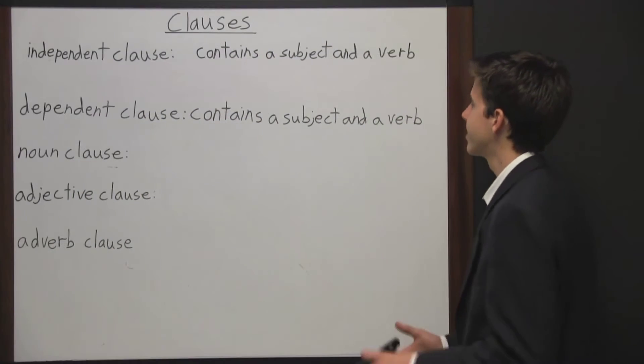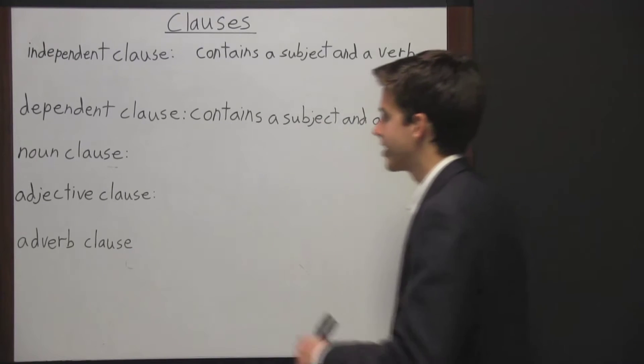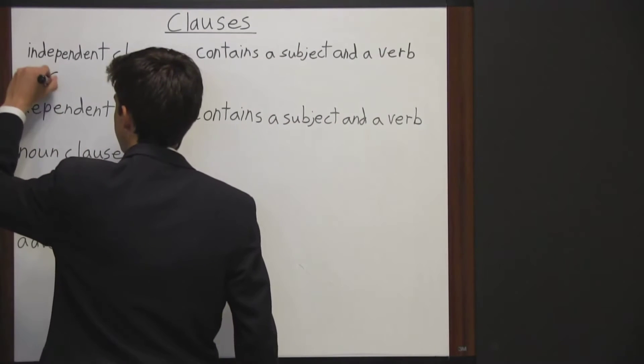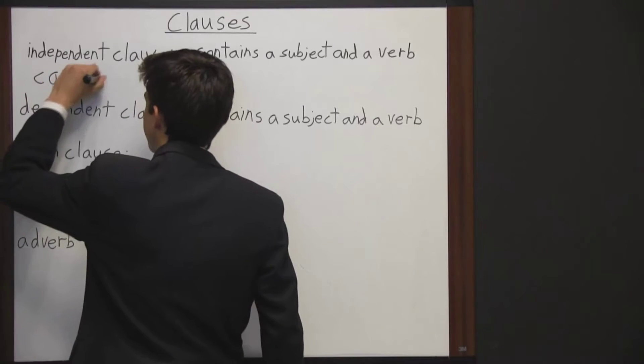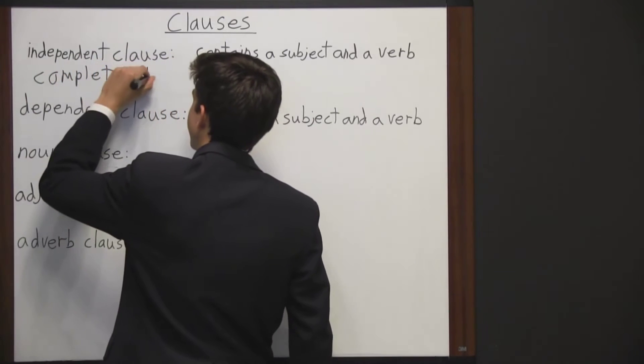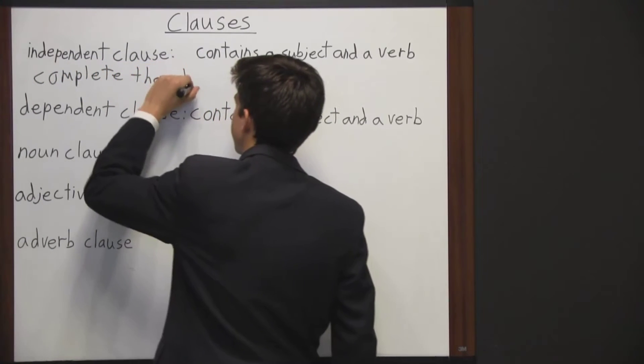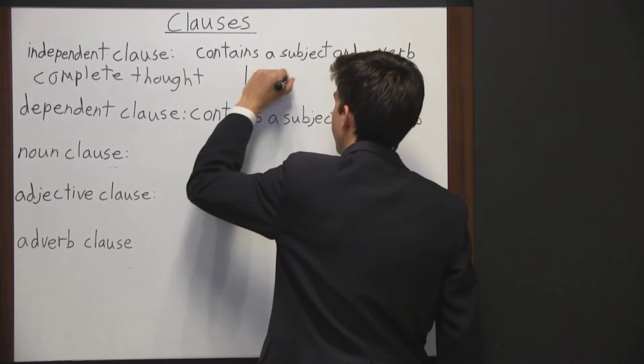An independent clause contains a subject and a verb, and it's a complete thought. So an independent clause can stand by itself, so it can be a sentence. Like the sentence, I am running.